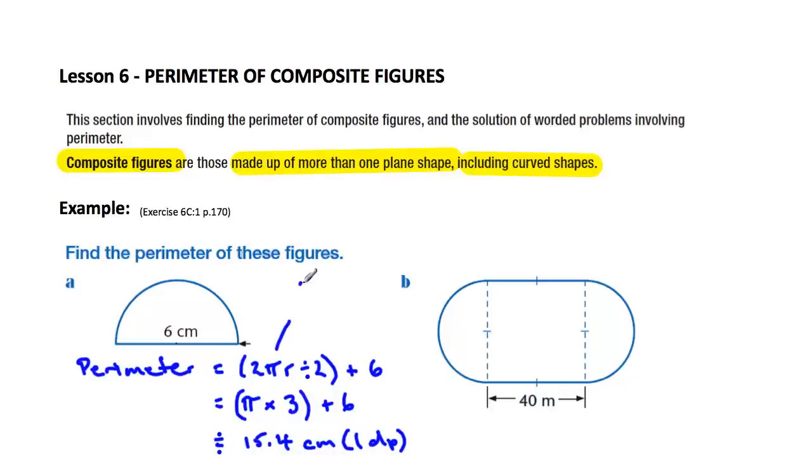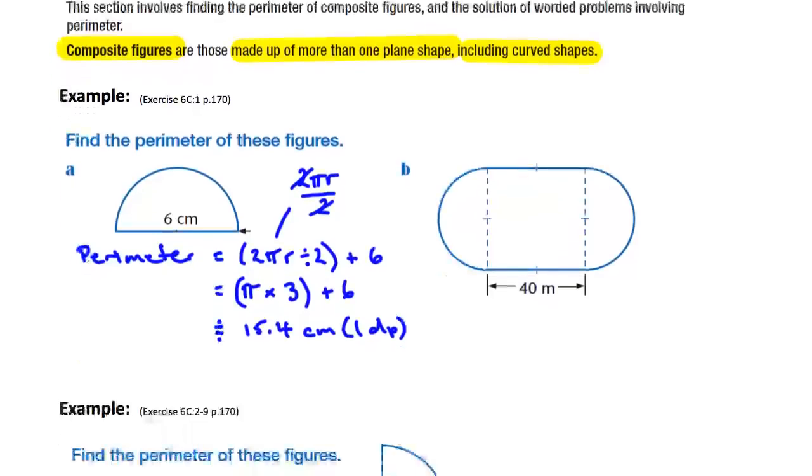Just to remind you again about this one here. So if I write this out as 2πr divided by 2, you'll notice that the 2's cancel out there. That's where this πr comes from. And then the radius is 3, that's half the diameter. So hopefully you can see where that comes from there. Now I'm going to just take this up a little bit to give us some more space.